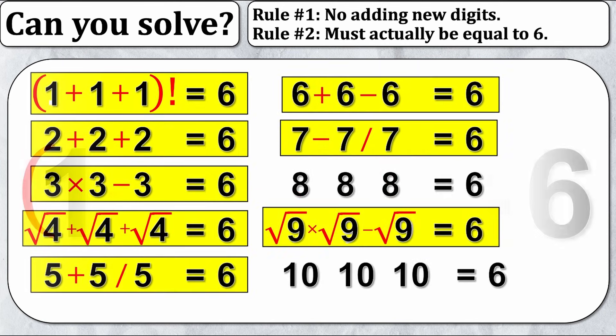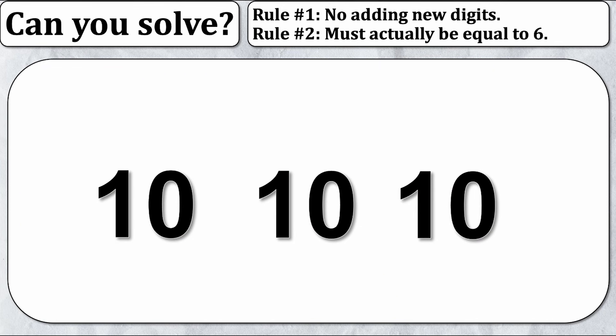Now we've only got two left. Let's take a look at how to do ten. Ten's a little bit complicated, but the first thing I'm going to do is actually make it equal nine. So ten minus ten over ten is nine. Ten divided by ten is one, ten minus one is nine.